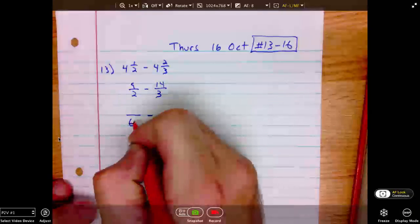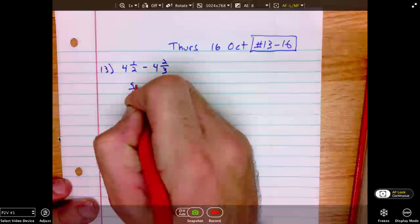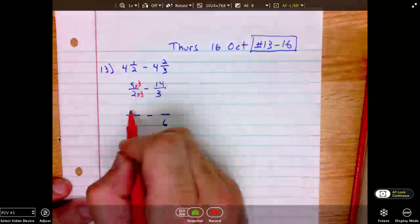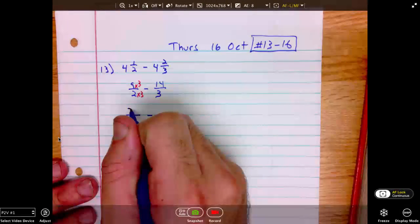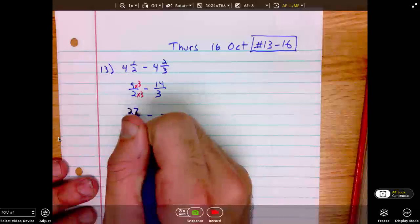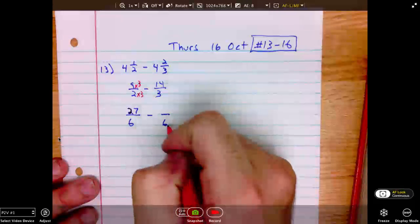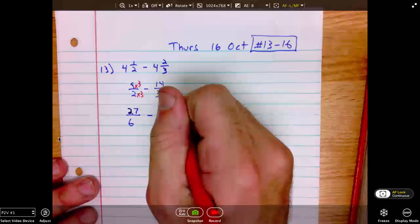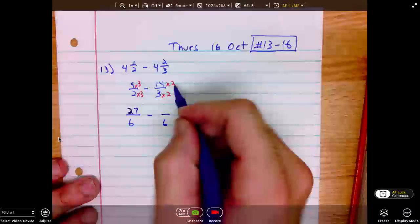2 times what yields 6? 3. So we must multiply the numerator by that as well. 9 times 3 is 27. 3 times what yields 6? Times 2. So 14 times 2 as well. 14 times 2 is 28.